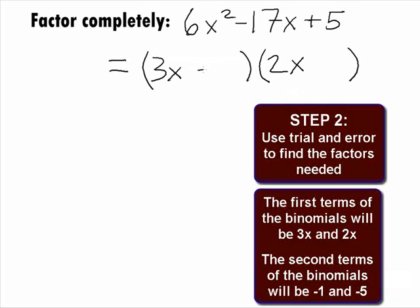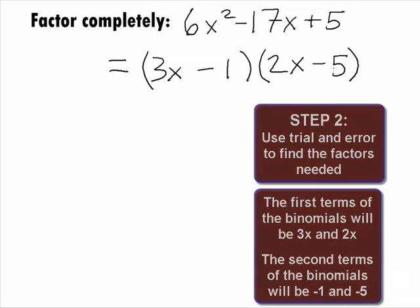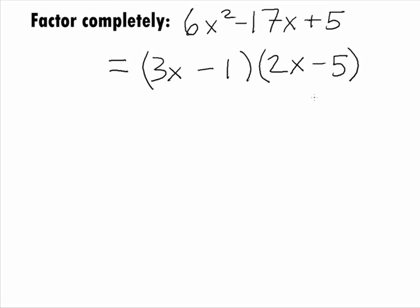The second terms end up being minus 1 and minus 5. So, our final answer on this is 3x minus 1 times 2x minus 5.